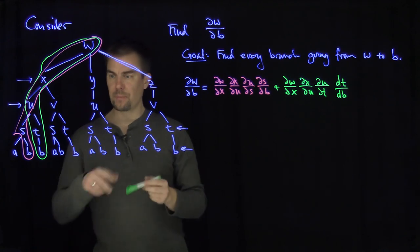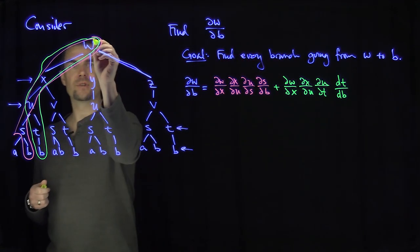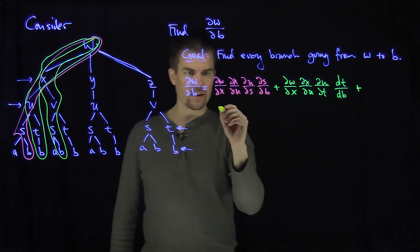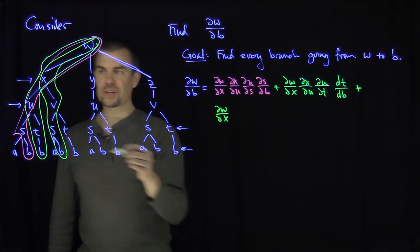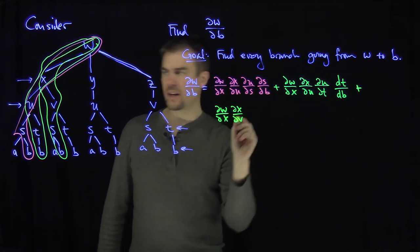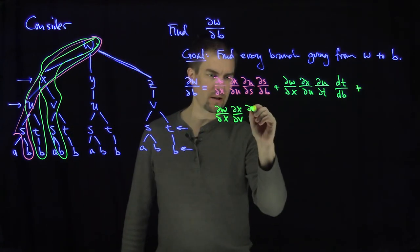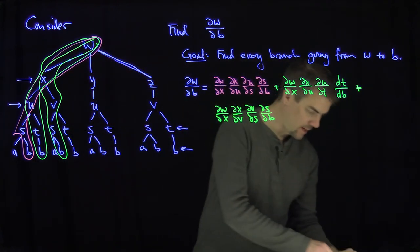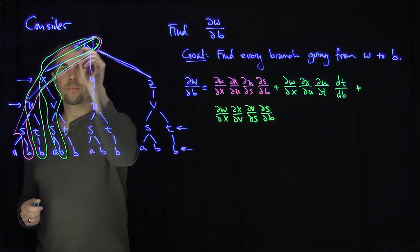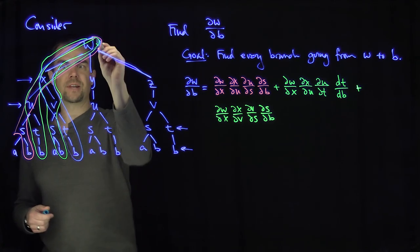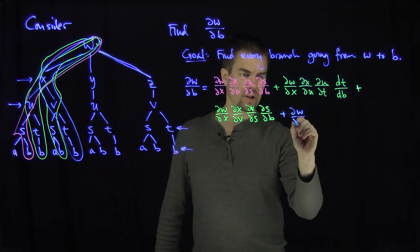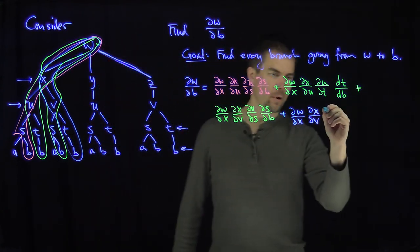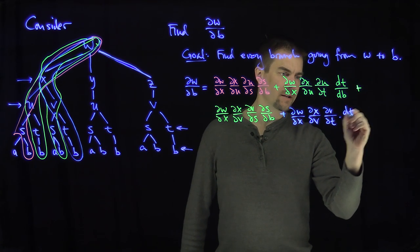There are two more ways to get to b through the x branch via v. The trajectory w→x→v→s→b gives: plus partial w partial x, times partial x partial v, times partial v partial s, times partial s partial b. The trajectory w→x→v→t→b gives: plus partial w partial x, times partial x partial v, times partial v partial t, times dt db.